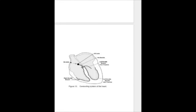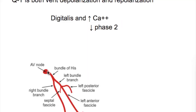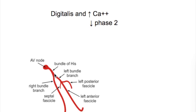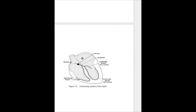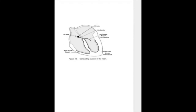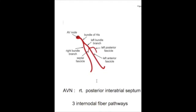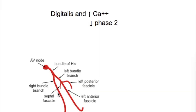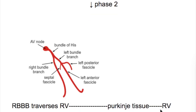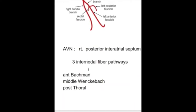From the AV node, the conducting tissue traverses the bundle of His, then divides into the right bundle branch and the left bundle branch. The anterior fasciculus and posterior fasciculus both arise from the left bundle. The right bundle branch traverses the right ventricle and through the Purkinje tissue supplies the right ventricle. The left bundle branch traverses the left ventricular septum and through Purkinje tissue supplies the left ventricle.